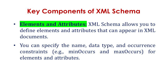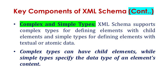There are key components of XML Schema that learners should understand well. First, elements and attributes: XML Schema allows you to define elements and attributes that can appear in XML documents, specifying their name, data type, and occurrence constraints such as minimum and maximum occurrences. Second, complex and simple types: XML Schema supports complex types for defining elements with child elements, and simple types for defining elements with textual or atomic data.